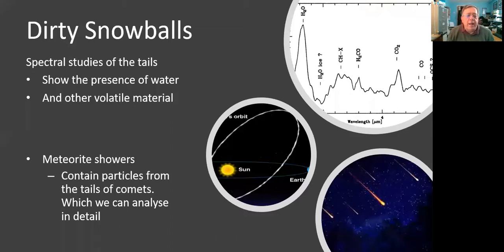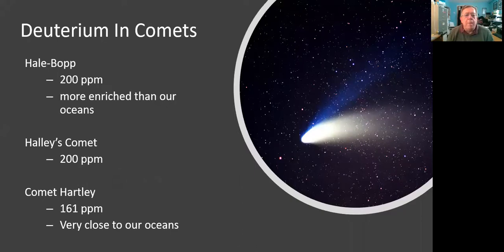We also get hit by showers of meteorites. And some of these also contain the remnant fragments of comets. So we can have a look and compare the amount of deuterium in the comets with the amount of deuterium we find on Earth and see if it matches.